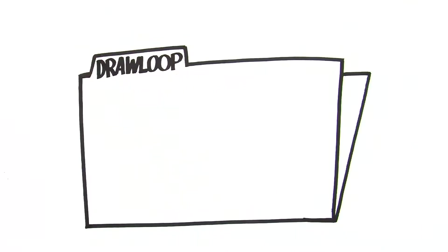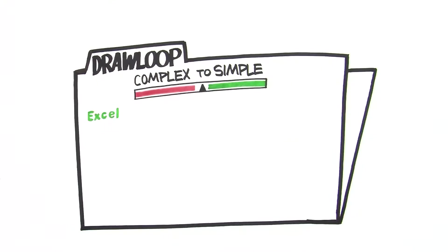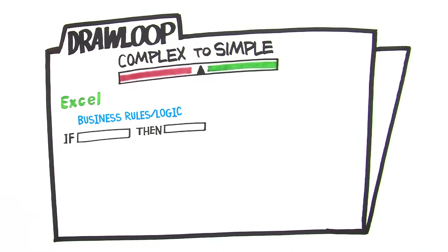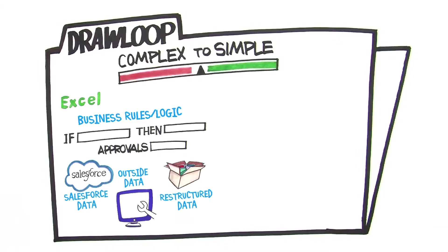Drawloop makes complex business processes simple, using Excel as middleware for calculations. Easy to set business rules to determine which documents are included, where they're sent, and who needs to approve. Custom and dynamic data is a snap, whether it's Salesforce data, outside data, or any data.